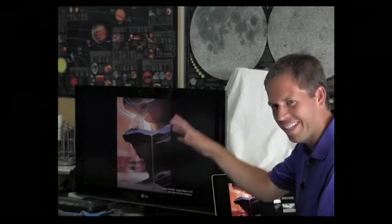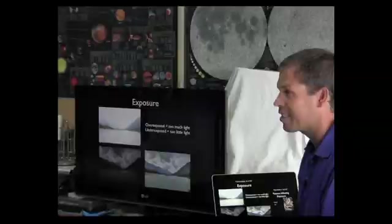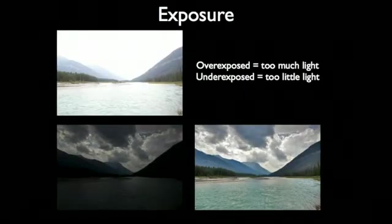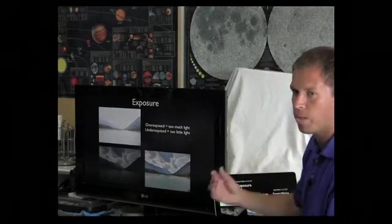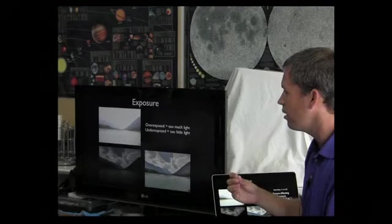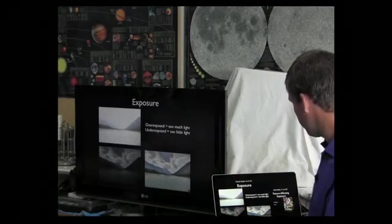Basic exposure: overexposed, underexposed, correctly exposed. The top one is overexposed, the middle is underexposed, and the bottom is just right. Overexposed means too light; underexposed means too dark. I'll be using those terms throughout.